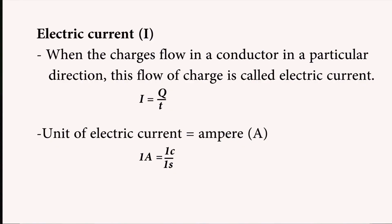Now let us look at electric current. When charge flows in a conductor in a particular direction, this flow of charge is called electric current. Electric current, denoted by capital I, equals electric charge Q divided by time T. The unit of electric current is ampere, denoted by capital A. Therefore, 1 ampere equals 1 coulomb over 1 second.